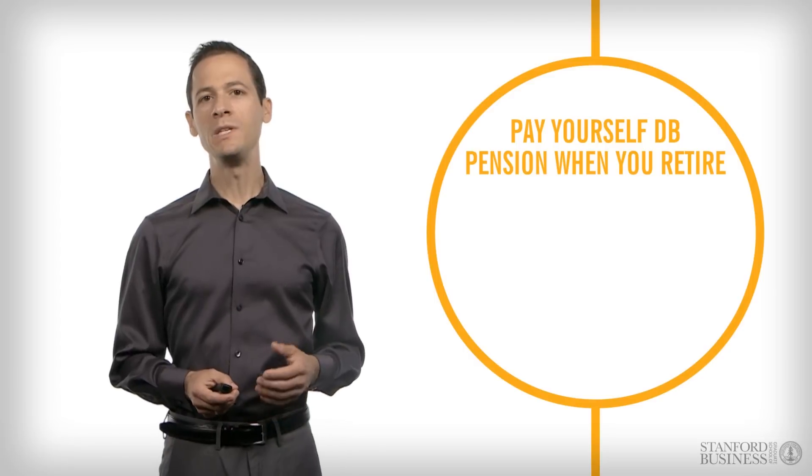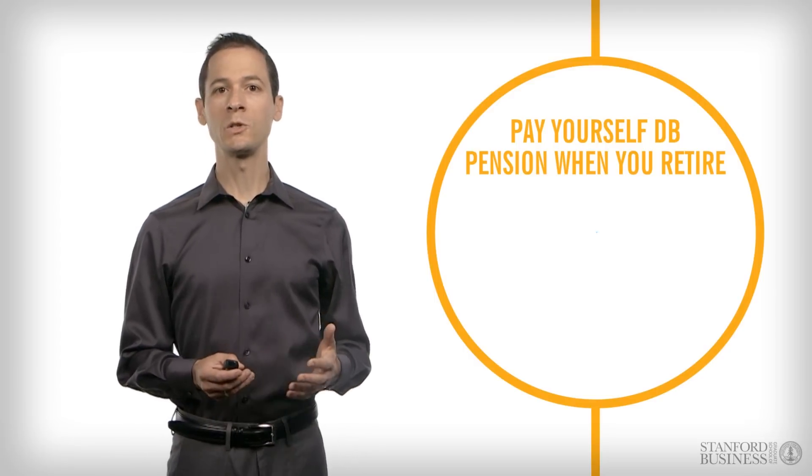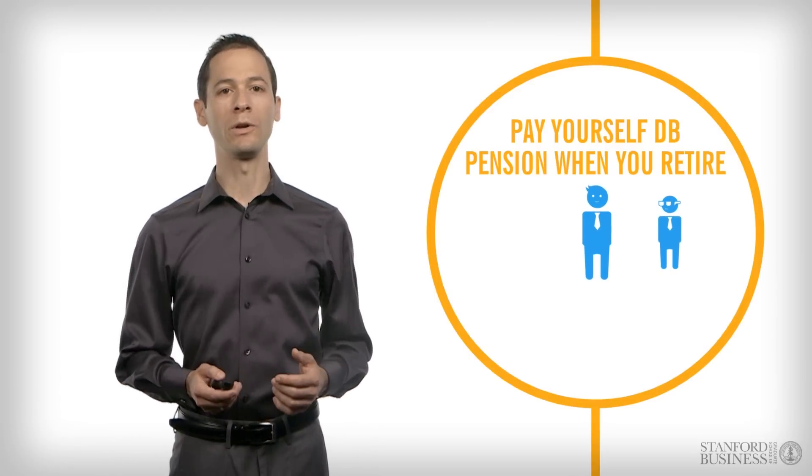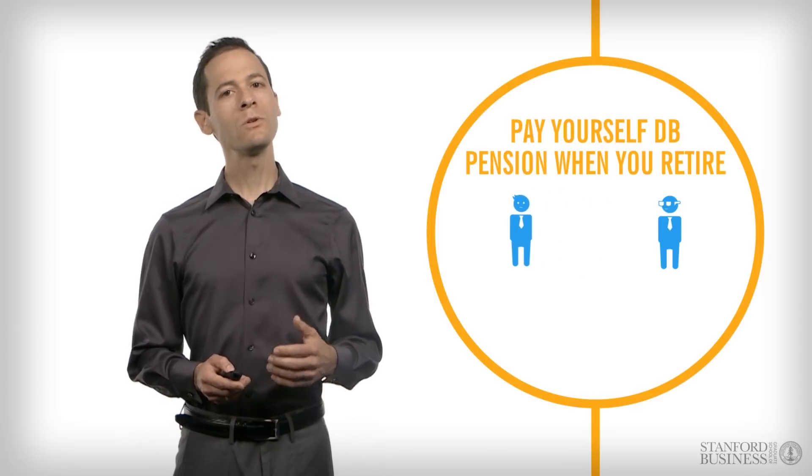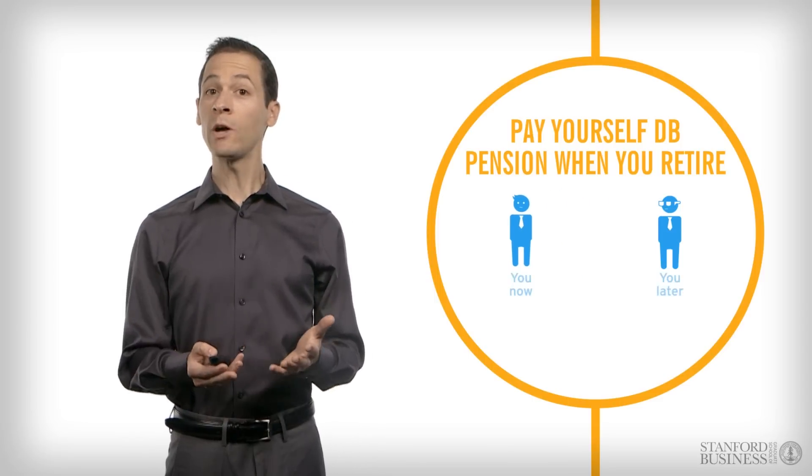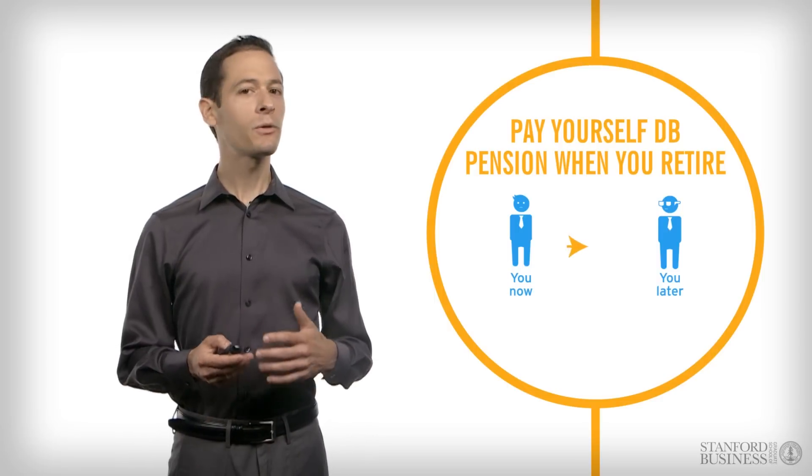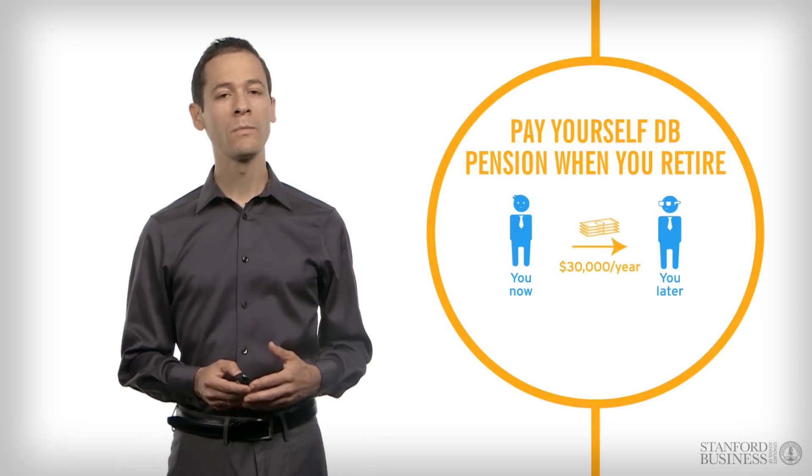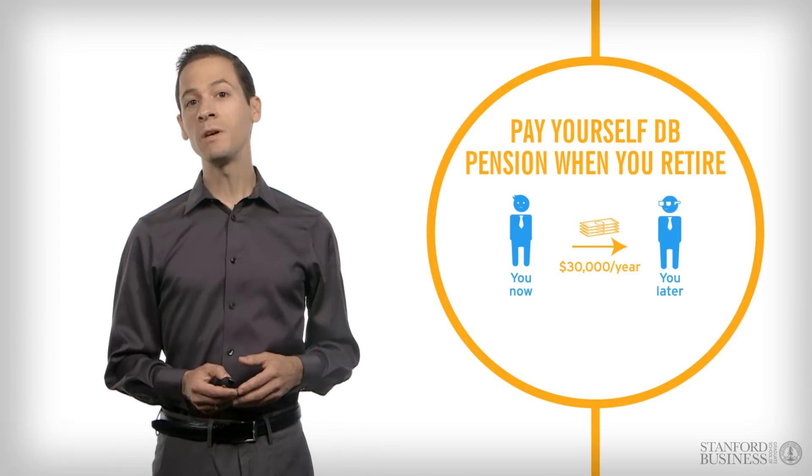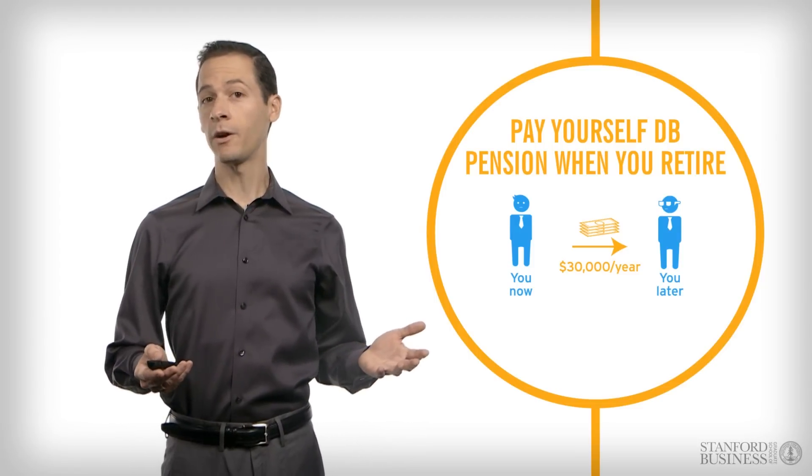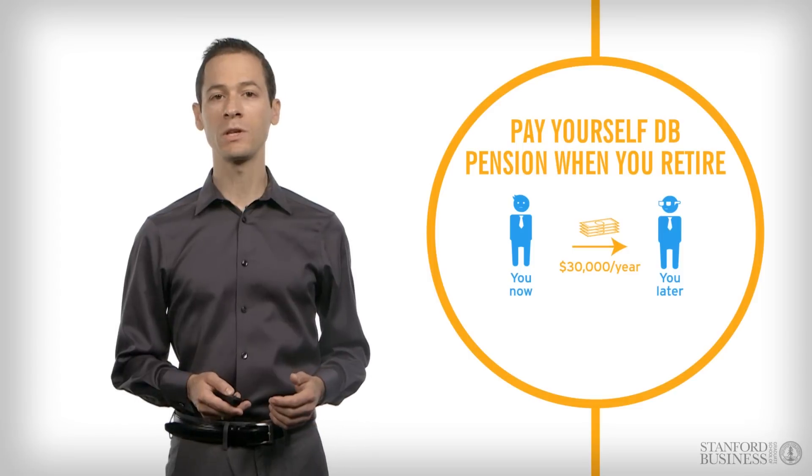One way to begin to think about the DB plans, whether you're one of the citizens who has one, or whether you're one of the citizens who, as a taxpayer, offers one to government employees, is to imagine that you wanted to try to pay yourself a DB pension when you retire - say, you have something like $30,000 per year. Well, you might start out by imagining that you could just save in your 401k, and then, when you retire, you could buy an annuity from an insurance company.